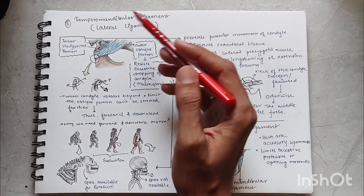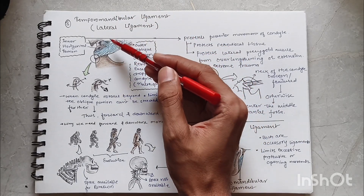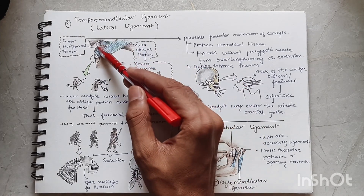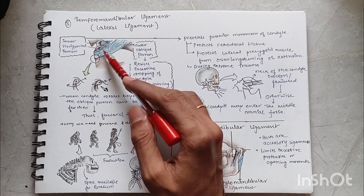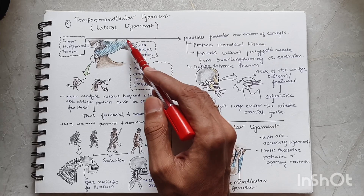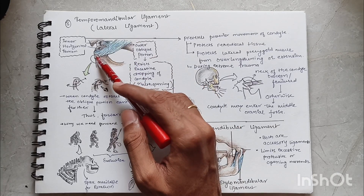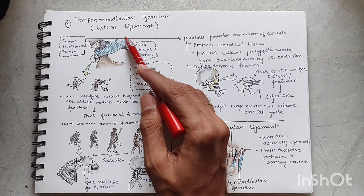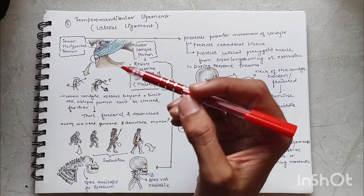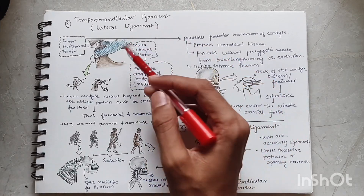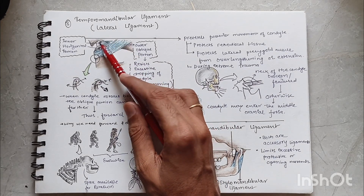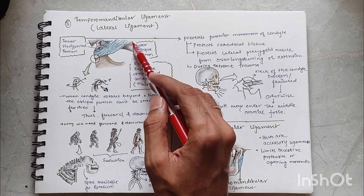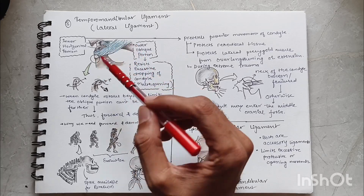The third primary ligament is the temporomandibular ligament or lateral ligament, divided into two parts: the outer oblique portion and the inner horizontal portion. The outer oblique portion attaches to the posterior border of the condyle and anteriorly to the articular eminence and anterior portion of the articular surface of the temporal bone. The inner horizontal portion attaches the disc to the anterior part of the articular eminence.